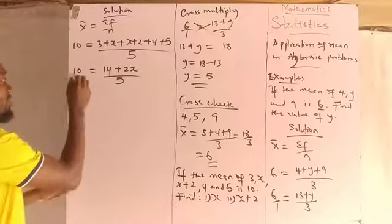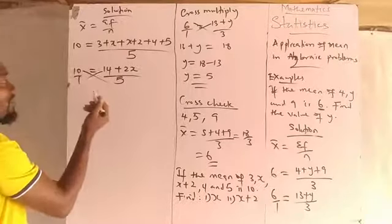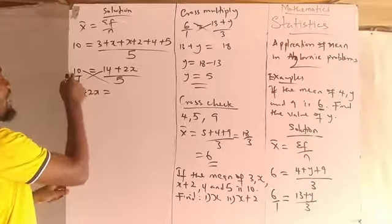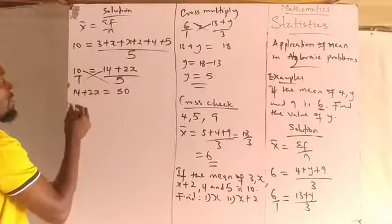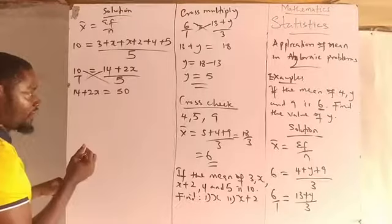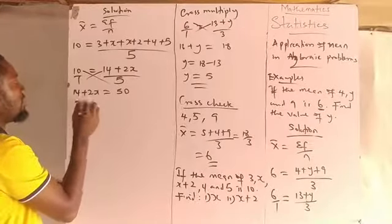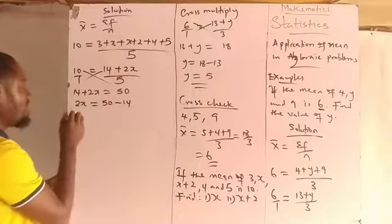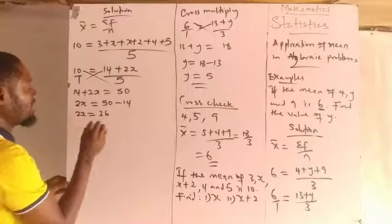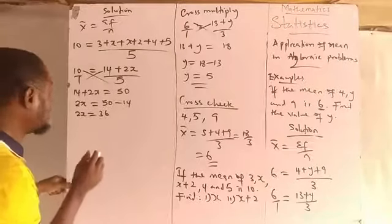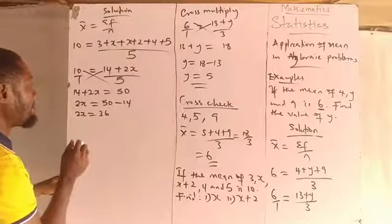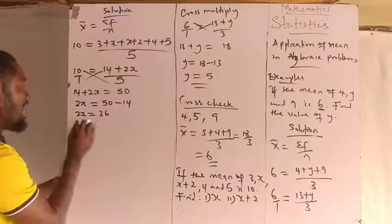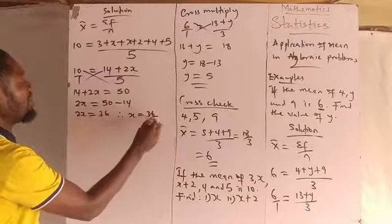Cross multiplying: 14 plus 2x equals 10 times 5, which equals 50. Moving 14 to the other side: 2x equals 50 minus 14, so 2x equals 36. Therefore x equals 36 divided by 2.